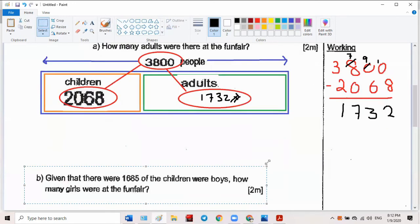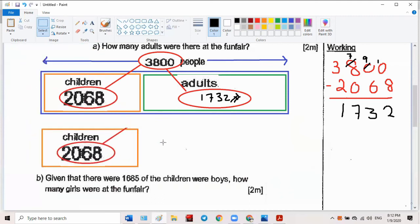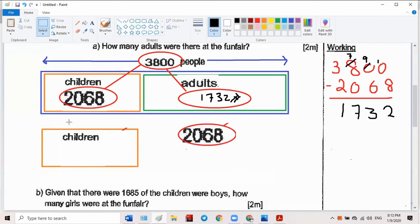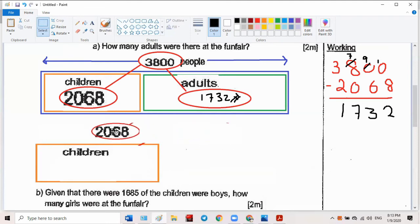In this case you're working with 2068. The 2068 will go on top. We have many children, and 2068 were the children, but the children - it says many were boys.